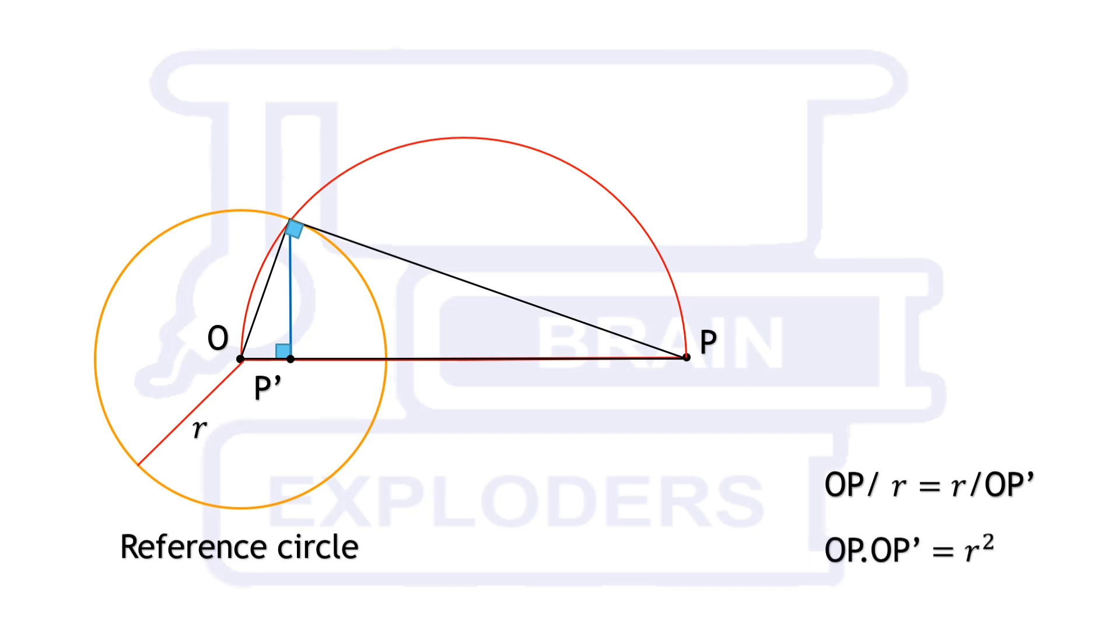You can verify it with the help of similarity of triangles. OP over R is equal to R over OP', therefore OP times OP' is equal to R square.